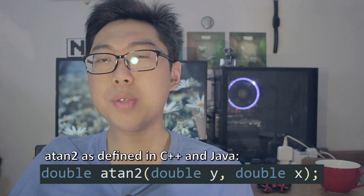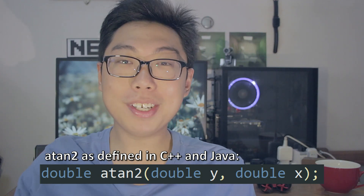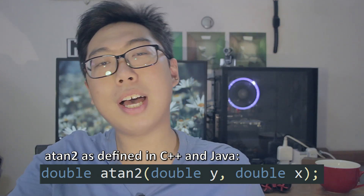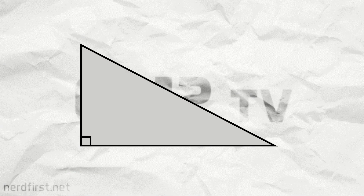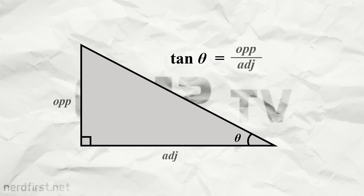In particular, in many programming languages, you have a function called atan2. But first, in order to understand this, we're going to have to take a quick look at the math side of things. You know how, in a right-angled triangle, you can take the tangent of one of the internal angles, and that value is equivalent to the ratio between the lengths of the opposite and adjacent edges. This, of course, makes up one of our most classic equations.